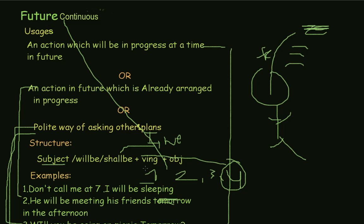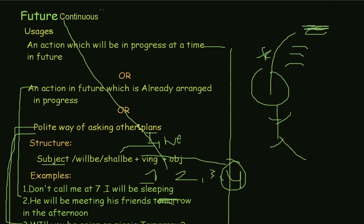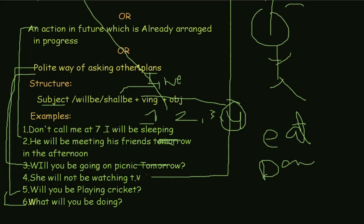For example, verbs like eat, dance, sit, make, watch — any word that defines an action is called a verb. Then we have the object. The object is very important — it completes the meaning of the sentence. For example: 'She will not be watching TV.' If you don't use the object, you'd say 'she will not be watching what?' — it becomes confusing. So the object completes the sentence. The first form of watch is 'watch,' and we add -ing to make it continuous: 'watching.'